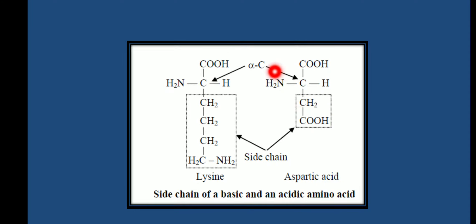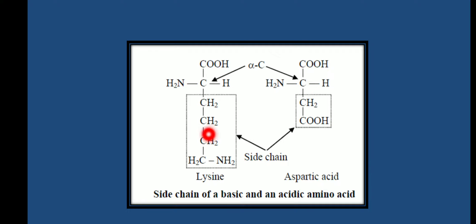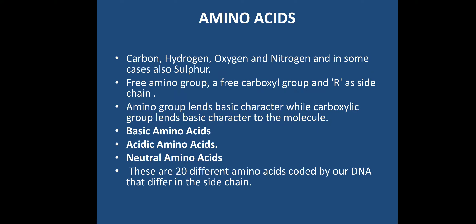All 20 amino acids share a general formula with a COOH group and an NH2 group present on the same carbon, called the alpha carbon. To this carbon, different types of compounds can be associated — these are called side chains, determined by the R group. The amino group lends basic character, while the carboxylic group lends acidic character.